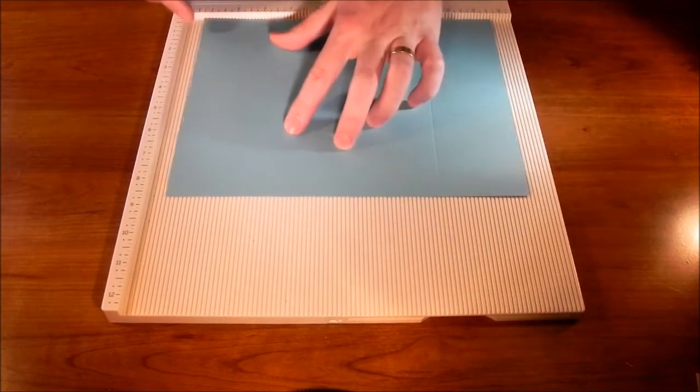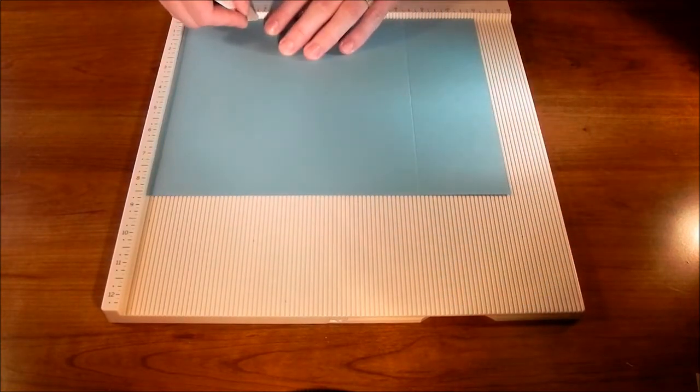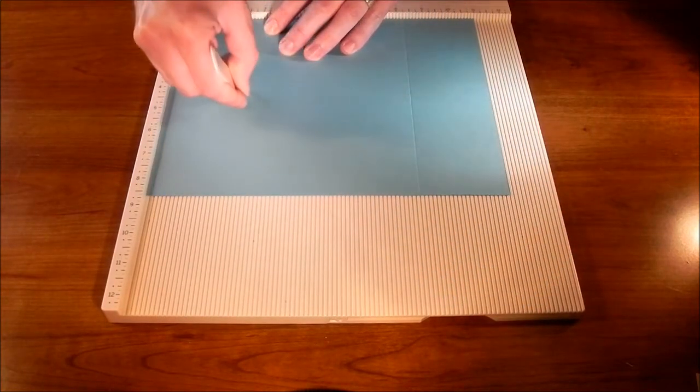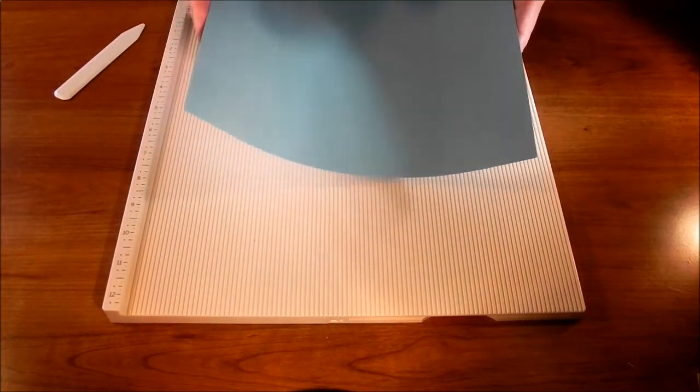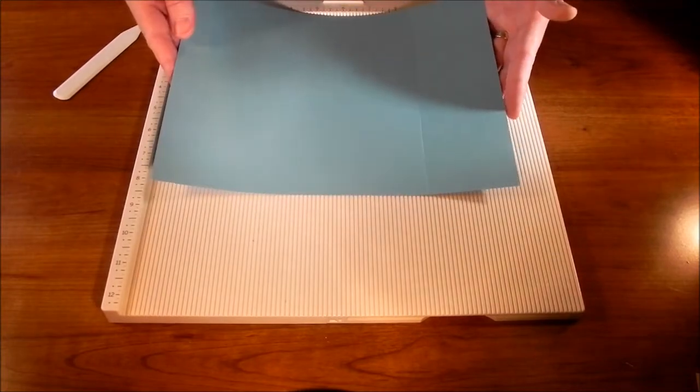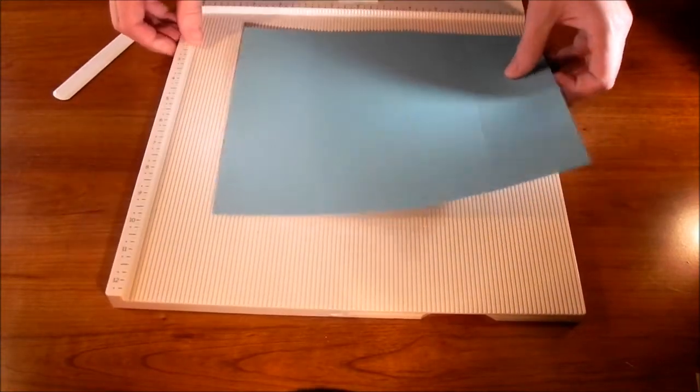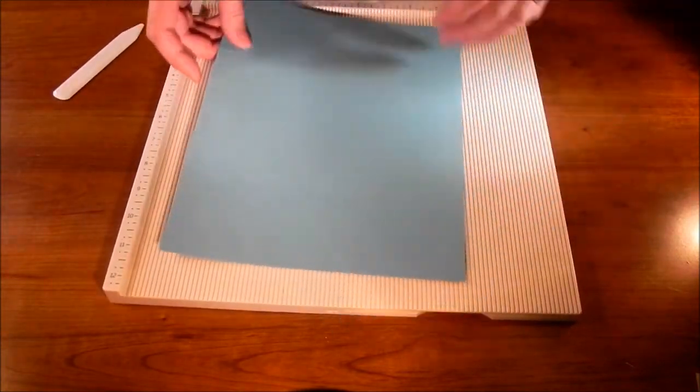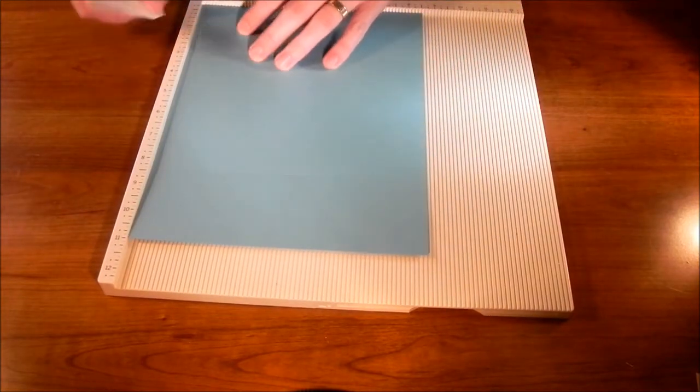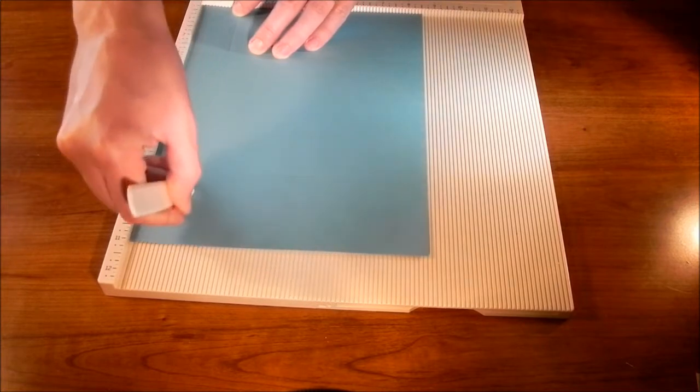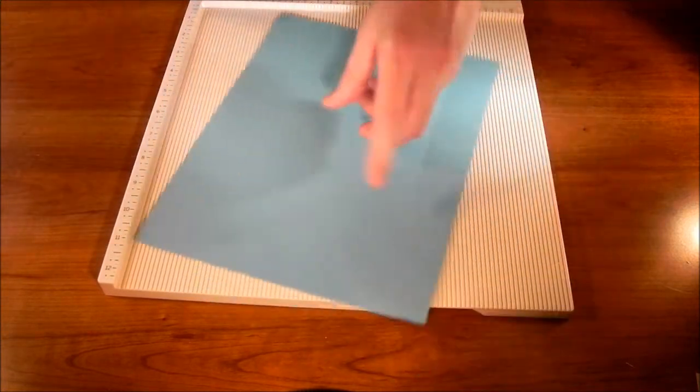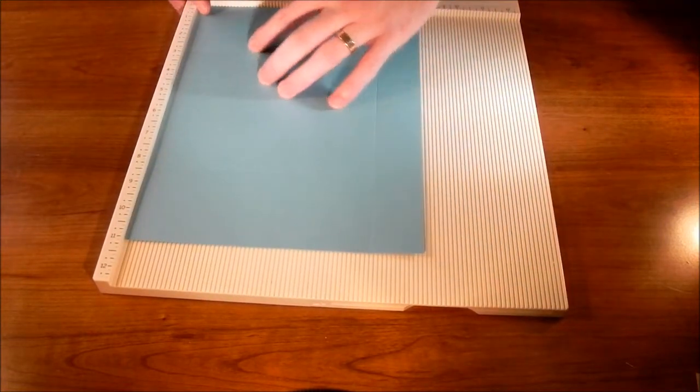Let's turn it, and we'll do 2 and 3.25 on the other side. Now we're going to turn it vertically and score it at 1.5. Turn the paper, and we'll do the other side at 1.5.